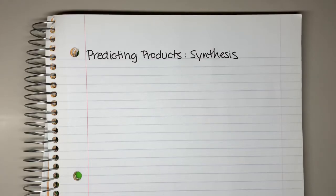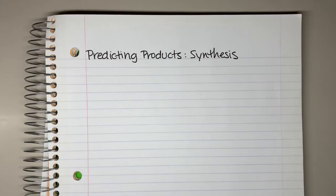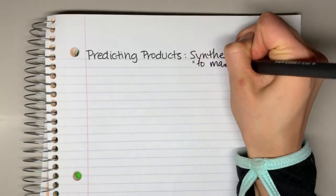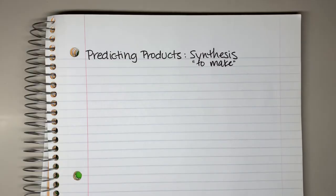In this video we are going to talk about how to predict products for synthesis reactions. Before we get into actually how to predict the products, we need to first focus on what a synthesis reaction is and how to recognize one from just the reactants. The term synthesis means to make, so this is where we put some reactants together to form a single product — we are putting the pieces together to make a larger molecule.